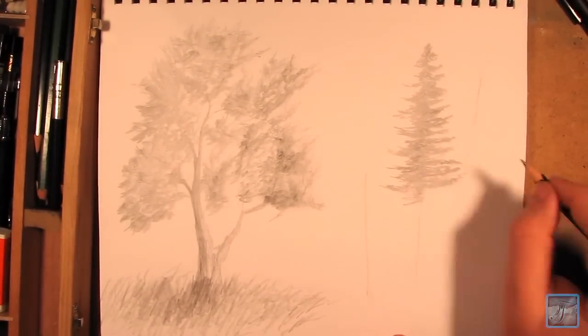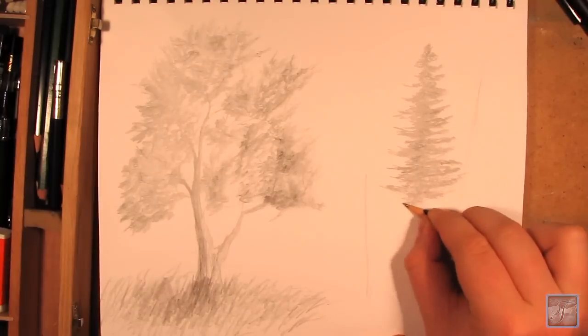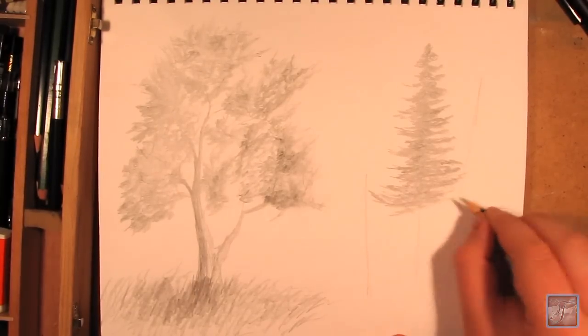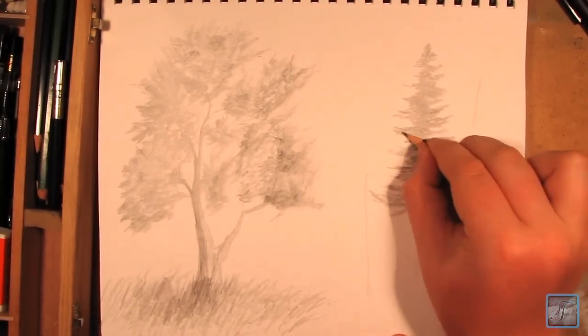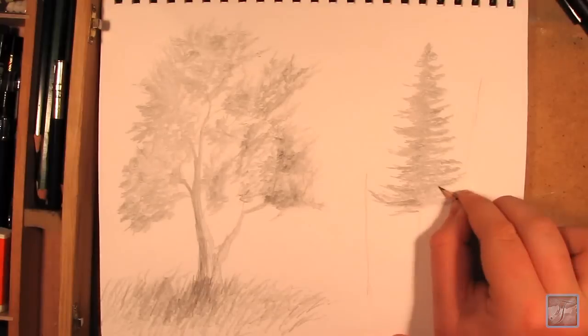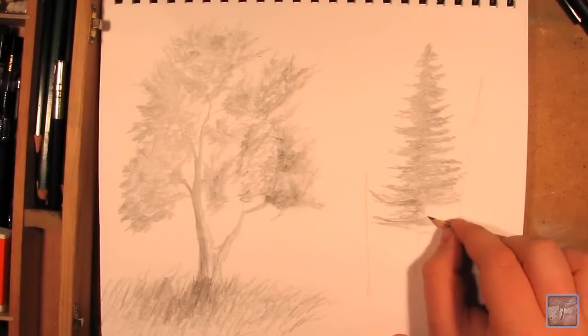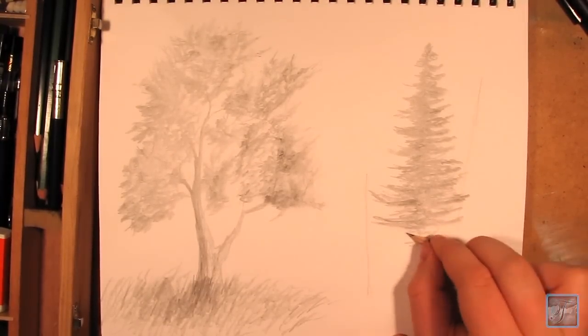Then as I work my way down, I don't like to make the tree look like a Christmas tree—you know, where it starts very narrow and gets very, very big at the base. I like to kind of keep them narrow all the way down. That's just kind of the way I prefer to draw these.